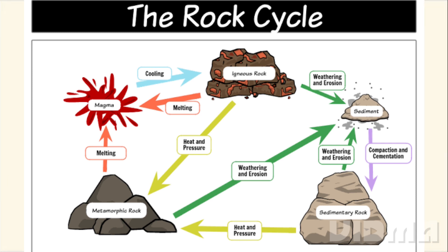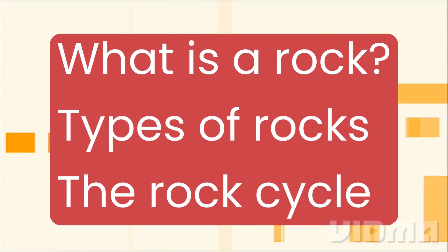With this, we come to the end of our today's video. Today we have studied what is a rock, the three different types of rocks formed due to the disintegration, cooling, melting, the changes in the rock because of heat and pressure, and also the rock cycle.